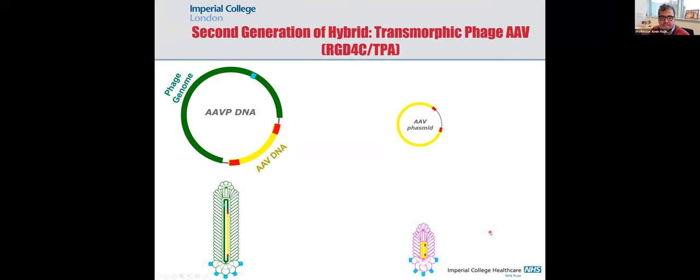Even tumors derived from a 10-year-old child who died of glioblastoma — when implanted in mice — we could cure 25% of mice, which is impressive when talking about glioblastoma. Now, in the remaining slides, I'll show you the second generation — the breakthrough we have achieved.